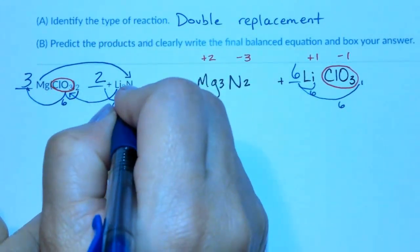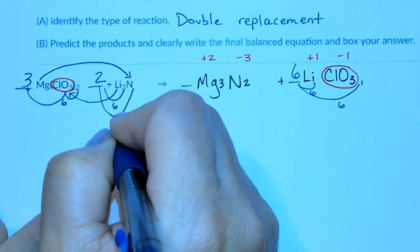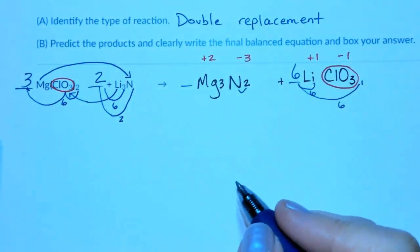Finally, we have 1 times 2 is 2 nitrogens. And then there are 2 nitrogens here. So now this equation is balanced.